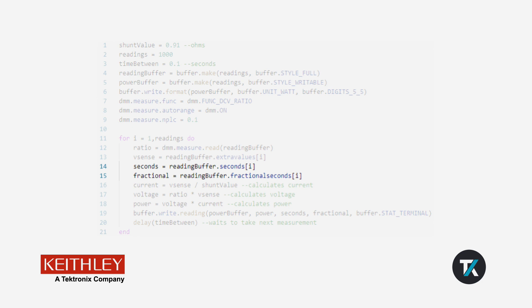We then store the seconds and fractional seconds from the ratio measurement. The current value is calculated by dividing the shunt resistor value from the sense voltage measurement according to Ohm's law. The voltage measurement is calculated by multiplying the sense voltage out of the ratio measurement, leaving only the voltage on the input terminals.